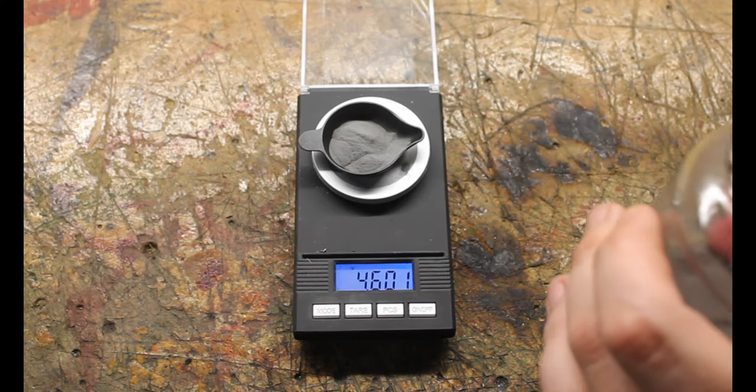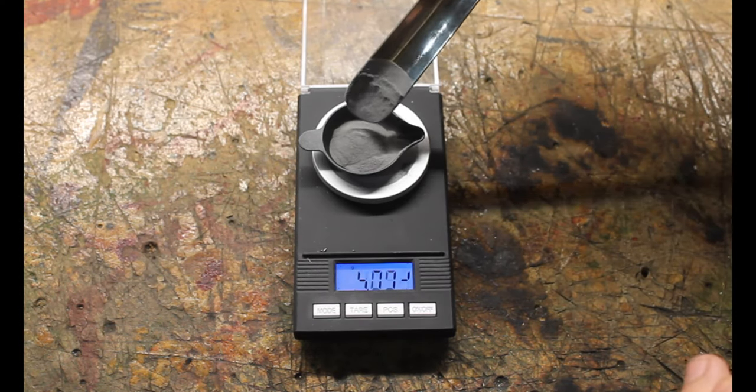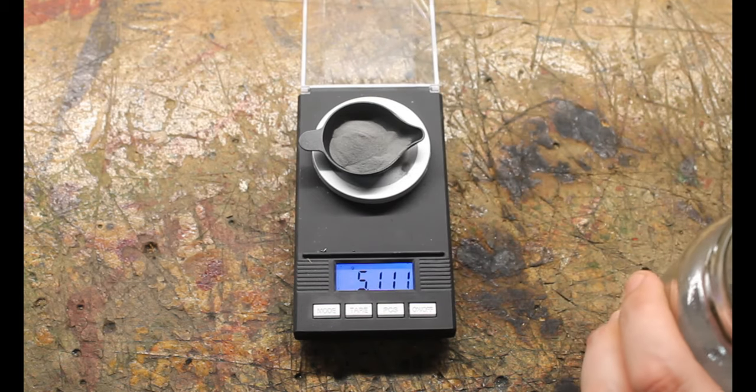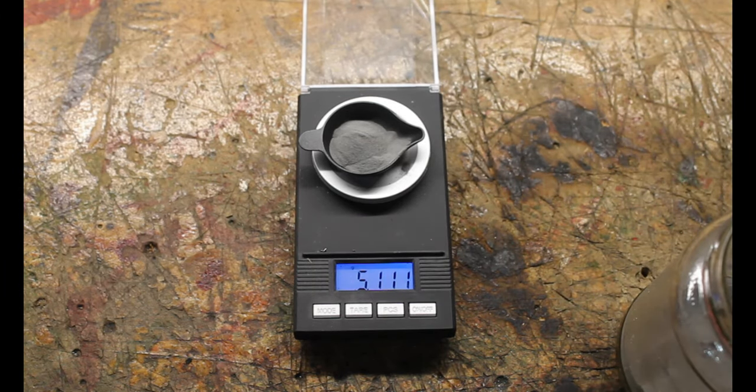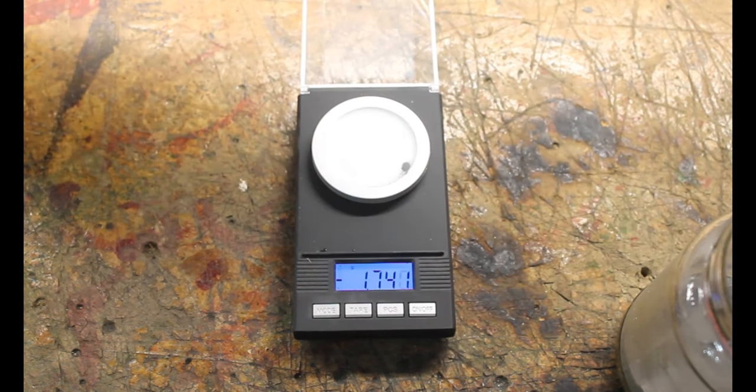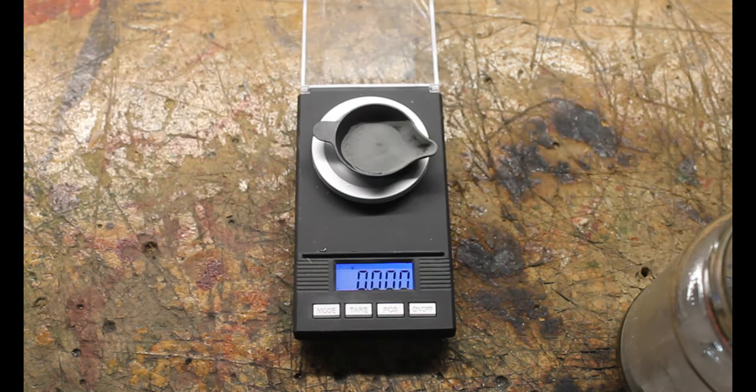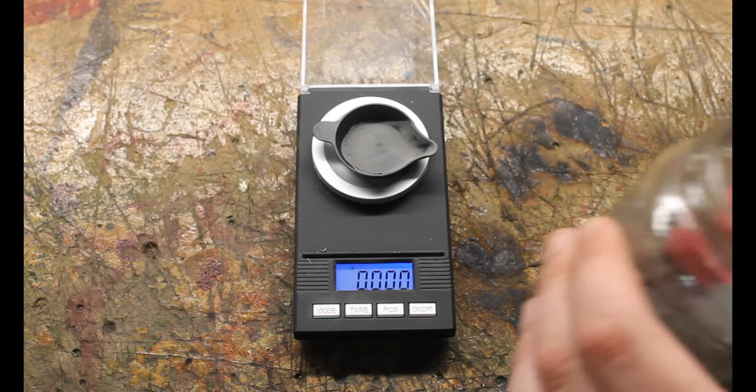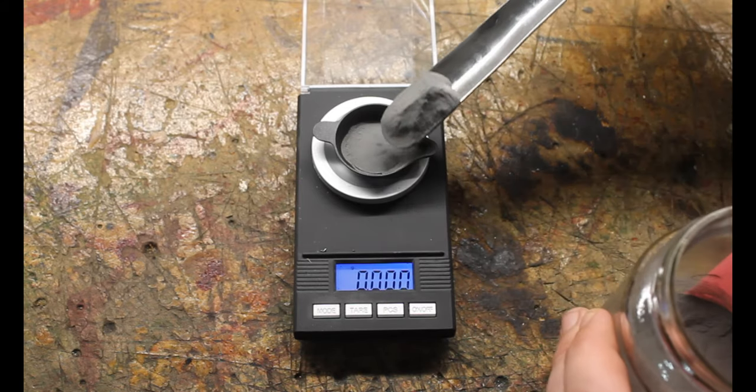We are going to start by measuring out approximately 10 grams of iron powder. Owing to the small size of our weigh boat, we do need to do this in two separate measurements of about 5 grams each.